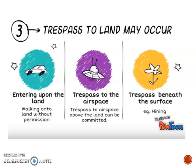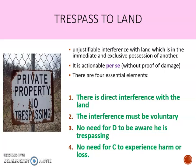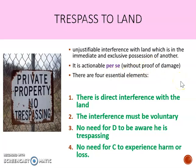Let's look at the requirements to sue in this tort. Trespass to land involves the unjustifiable interference with land which is in the immediate and exclusive possession of another. It is actionable per se, so you don't have to prove any damage. When we study nuisance, which is similar in some respects, you have to prove that there was harm. But with trespass to land, you don't have to prove there was any harm whatsoever — the mere fact that somebody or something has entered onto your land is enough.